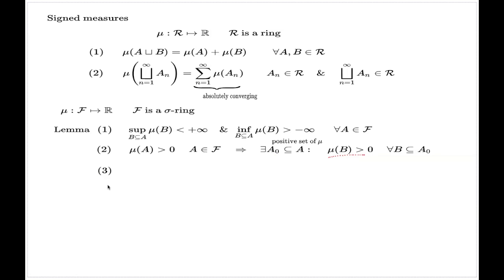The third property is called the Hahn decomposition. It's another development of property number two, and it says that there are special subsets A plus and A minus, such that they are disjoint, they cover the whole universal set, and A plus is a positive set and A minus is a negative set, meaning that the measure of every subset of A plus is positive, and the measure of every subset of A minus is negative, for all B from the sigma ring F.